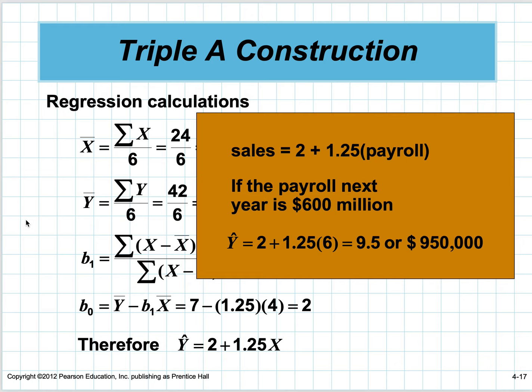Sales equals 2 plus 1.25 times the local payroll. If the payroll next year is 600, that means the company is expecting 9.5, or $950,000, in sales.